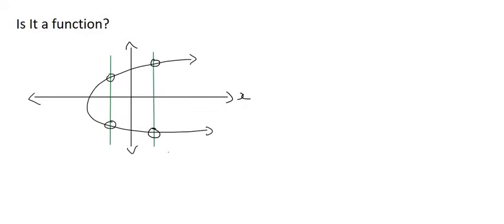Let's look a little deeper into what's actually happening. If we look at this point and this point, they share the same x value, because they haven't gone left or right from each other, but they have different y values. So we have one x value, but that one x value has more than one y value. We call that a one-to-many — one x value to many y values. That is not a function.